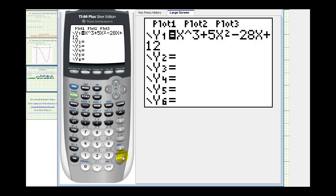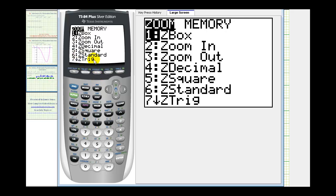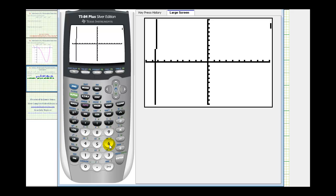Now let's go ahead and start with the standard window. So we'll press zoom 6 for z-standard from here. Now this isn't a great window because we don't see the high points and low points on the graph, but we do see the three x-intercepts.